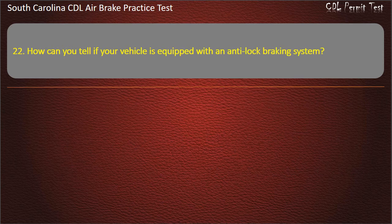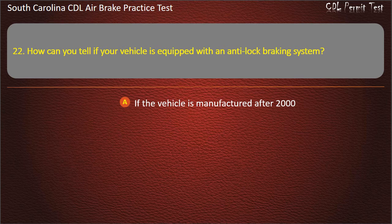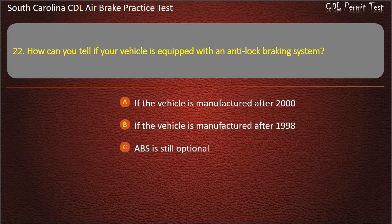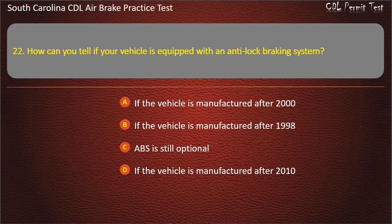Question 22: How can you tell if your vehicle is equipped with an anti-lock braking system? If the vehicle is manufactured after 2000, if the vehicle is manufactured after 1998, ABS is still optional, or if the vehicle is manufactured after 2010. Answer: If the vehicle is manufactured after 1998.